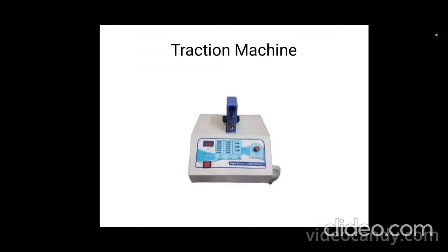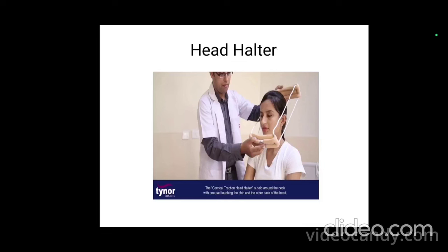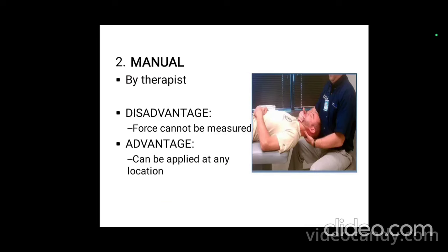This is the traction machine, and this is the head halter. It has two types of straps: one that goes over the mandible and the second that is the occipital strap. The second type of traction is manual, meaning it is applied by the therapist. The disadvantage of manual traction is that the force cannot be measured, unlike mechanical cervical traction.